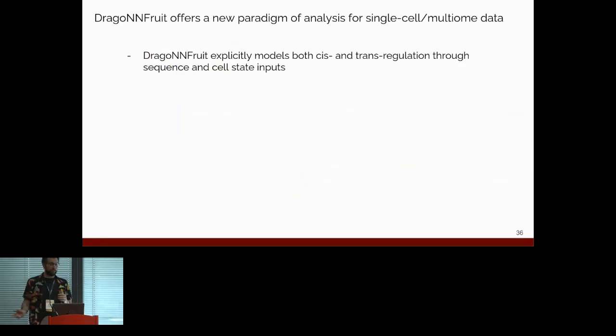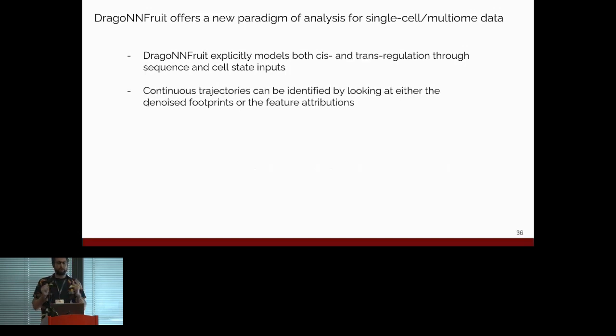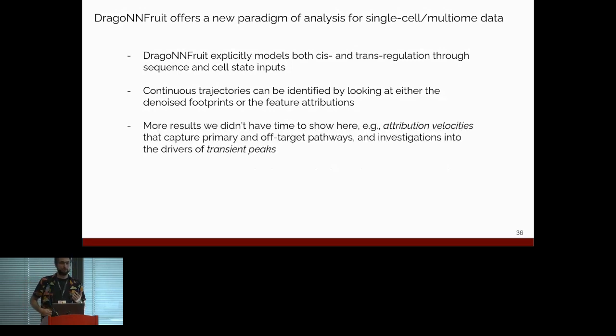So just to conclude, DragonFruit offers a new model for capturing cis and trans regulatory factors underpinning chromatin accessibility. You can look at this either by using denoised footprints, either just across the genome or in silico experiments, or you can use attributions. Both of these analysis modules are useful and can help you answer biological questions. I obviously didn't have time to go into everything that we have here, but we have some other ideas that are going to be in the preprint. We want to have the preprint out by August, which means it'll probably be out by November. Some of those things include attribution velocities, which kind of extend the idea of RNA velocity to this attribution space. There are also a lot of really interesting stuff going on in transient peaks, peaks which are only active for a little point in time. And continuous models can really help there.